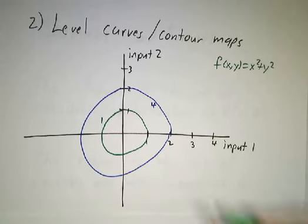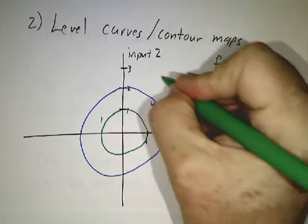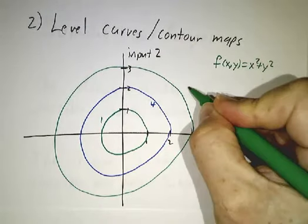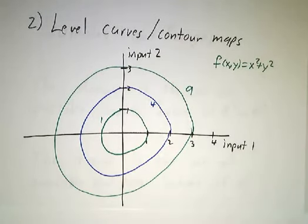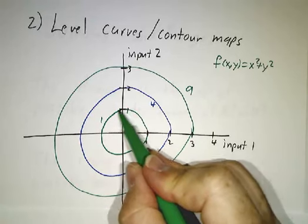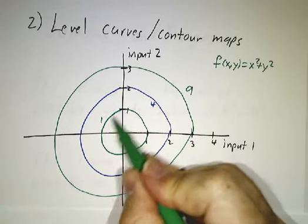And put a circle here and draw the number nine by it. And what we're saying is at all of these points on this inner circle,